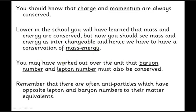We've also looked at baryon number and lepton number — these are two other properties which are always conserved. If you've got one baryon before an interaction, you will always have one baryon afterwards. The same applies to leptons. The tricky part is pair production: we can make an electron and a positron together, but the antiparticle has a lepton number of minus one. So electron is plus one, positron is minus one — lepton number is still zero overall.